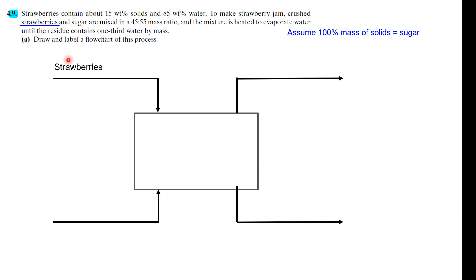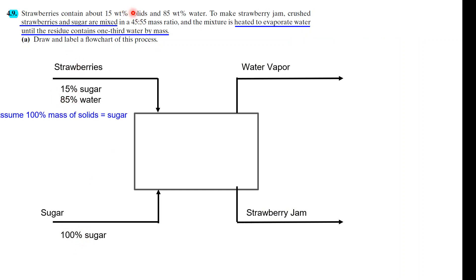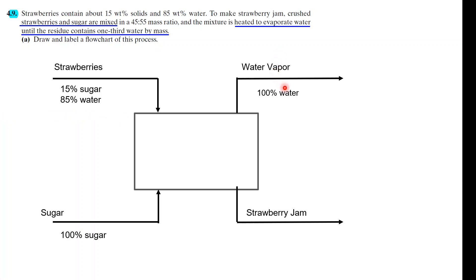You've got strawberries and sugar coming in, mixed in a 45 to 55 mass ratio, heated to evaporate the water. So there's going to be water vapor out and strawberry jam out. The sugar input is clearly 100% sugar. The strawberries we're going to assume are 15% sugar by solids and approximately 85% water — which is pretty crazy but we go with it. The water vapor is 100% water, and the strawberry jam is one-third water by mass, so therefore two-thirds sugar by mass.